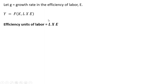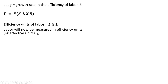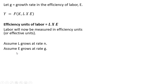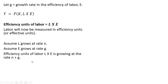Rewriting our production function, L times E is going to be efficiency units of labor. Labor will now be measured in efficiency units, or effective units, or effective workers. We're going to assume L grows at rate N — population growth at rate N — and E grows at rate G. So efficiency units of labor, L times E, is growing at N plus G.